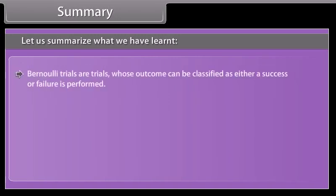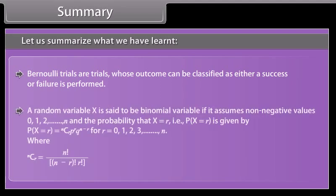Bernoulli trials are trials whose outcome can be classified as either success or failure. A random variable X is said to be a binomial variable if it assumes non-negative values 0, 1, 2, ..., N and P(X = R) = NCR · P^R · Q^(N−R).